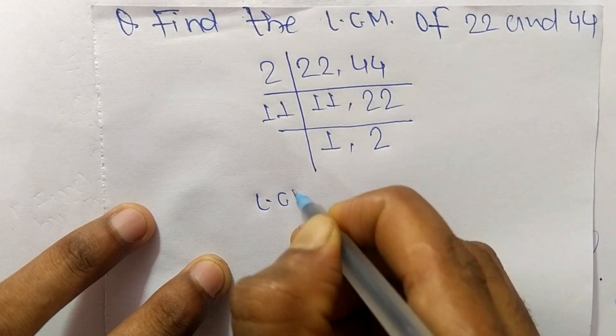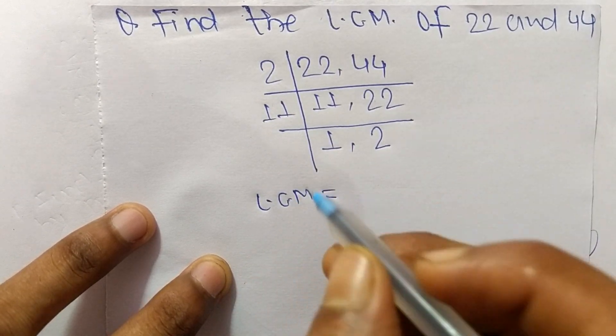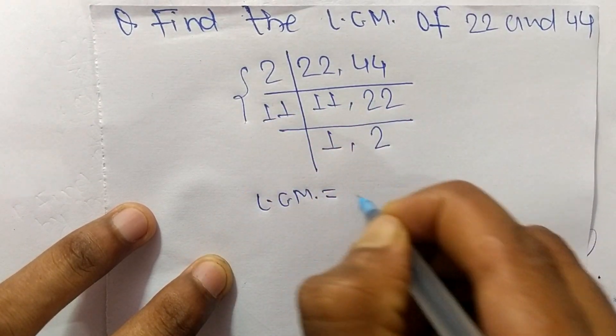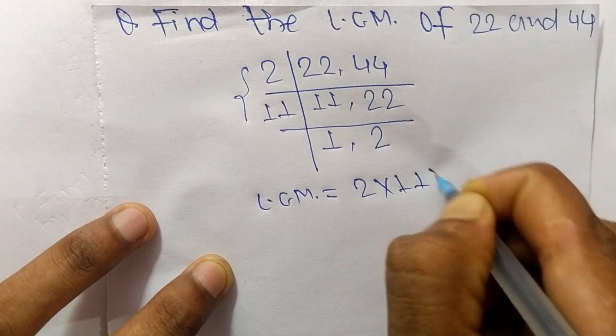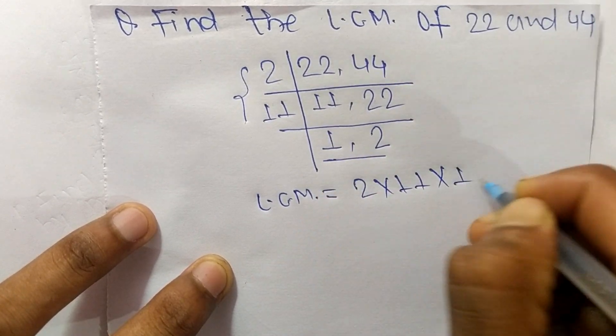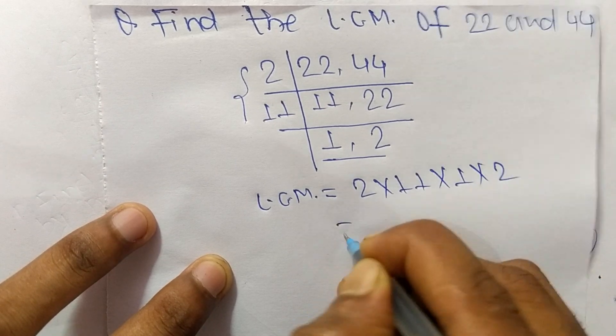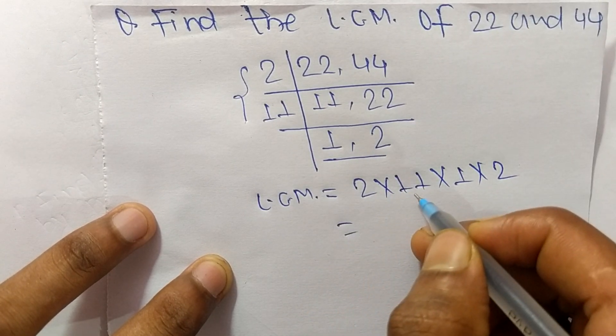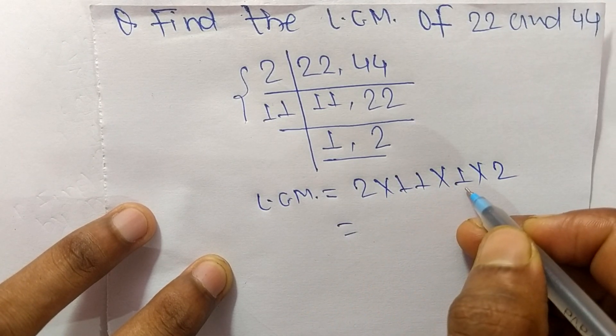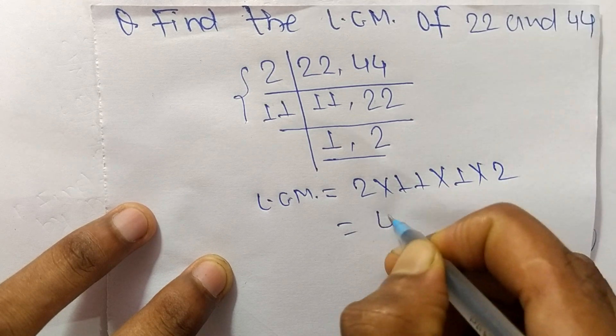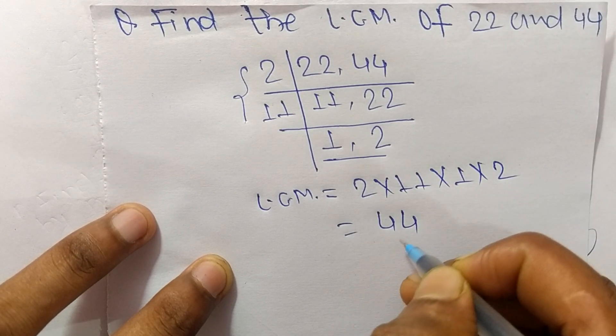So the LCM is equal to, from this part, 2 times 11, and from this part, 1 times 2. So 2 times 11 equals 22, times 1 equals 22, times 2 equals 44. So 44 is the LCM of 22 and 44.